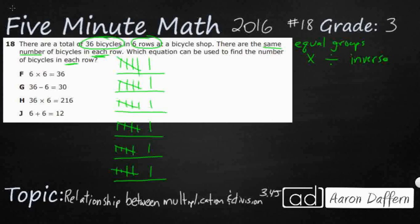So it looks like what I did was I took my 36 bicycles and I divided them into 6 rows evenly. And then my answer is going to be, how many are there per row? So in this case, it is 6.